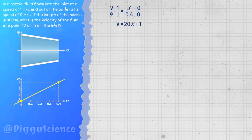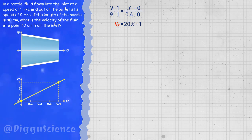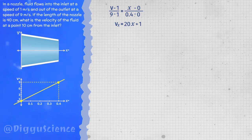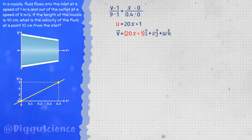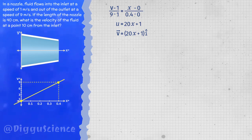Since the particle is moving on the x-axis, this is the x-component of the particle's velocity. We often write the fluid velocity field in the form of component vectors. The value of the velocity here is the value of u in the velocity field, because u is the component of the velocity vector on the x-axis. Thus, u equals 20x plus 1.